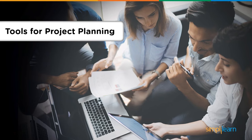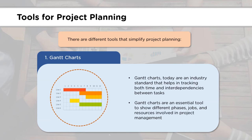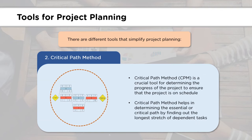Moving on, let's have a look at the tools for project planning. The first tool is a Gantt chart. Gantt charts are one of the most popular project management tools today. They help in tracking the status of work at a particular time and their interdependencies on each other. Gantt charts help in showing different phases and steps involved in a project.